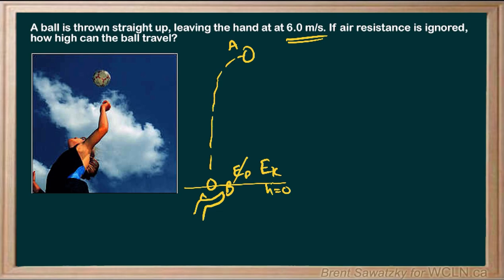As it travels up to the very top — our after state — we definitely have potential energy since the height h is not zero. The kinetic energy, on the other hand, is zero at the very top: the velocity starts at 6 and decreases until at that instant it reaches zero. Then it becomes negative as the ball heads back toward the ground, so kinetic energy at the top is zero.